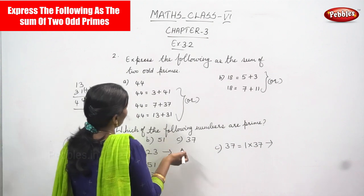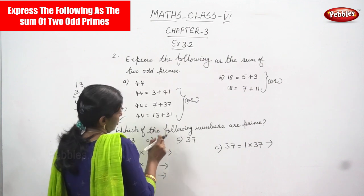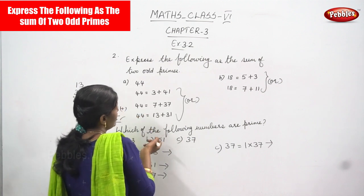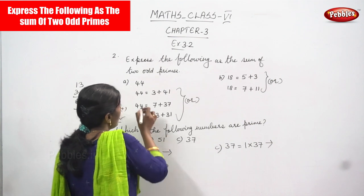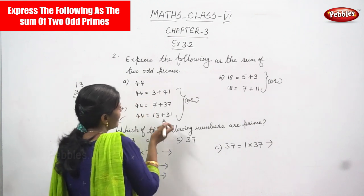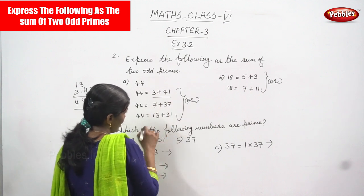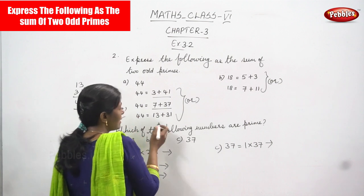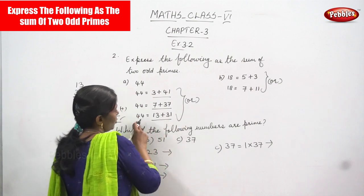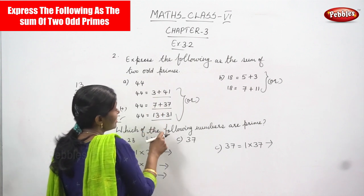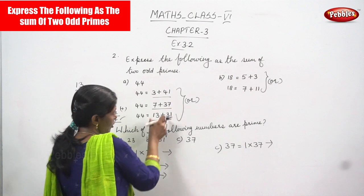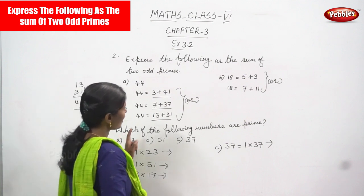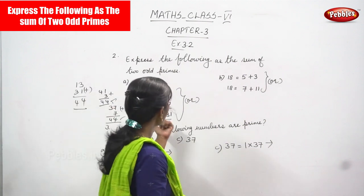So the possible pairs of two odd prime numbers that add up to 44 are: 3 plus 41, or 7 plus 37, or 13 plus 31. These are all pairs of two odd prime numbers — these are the possibilities, and adding each pair gives you 44.